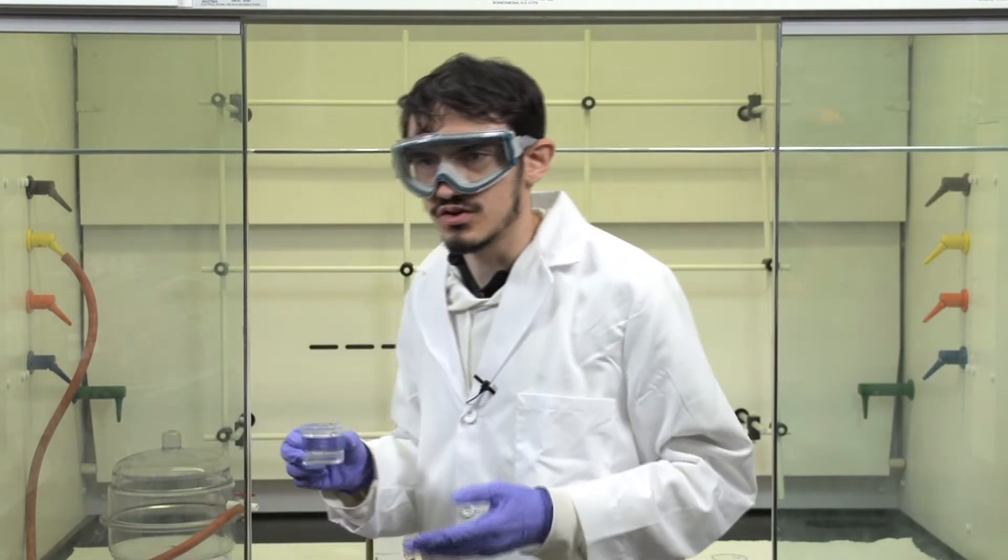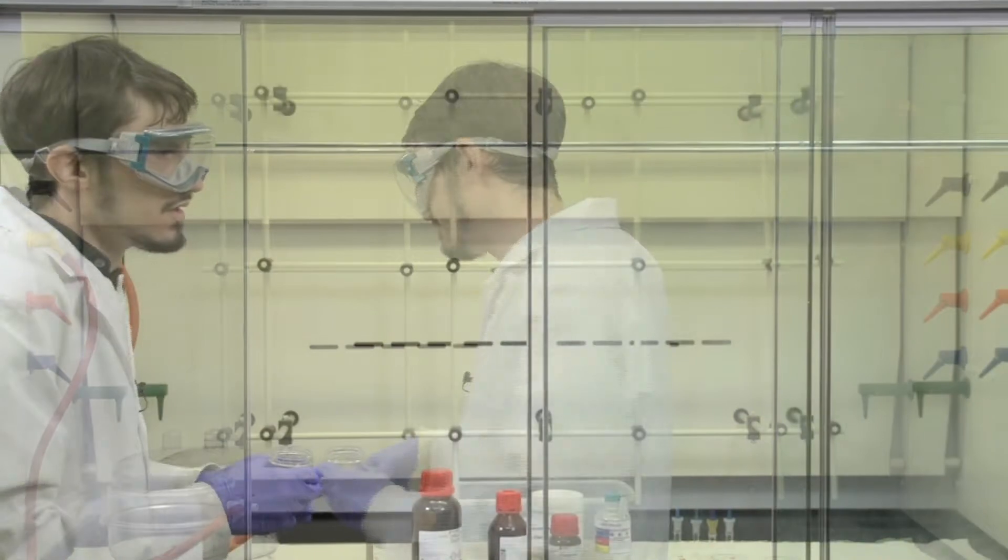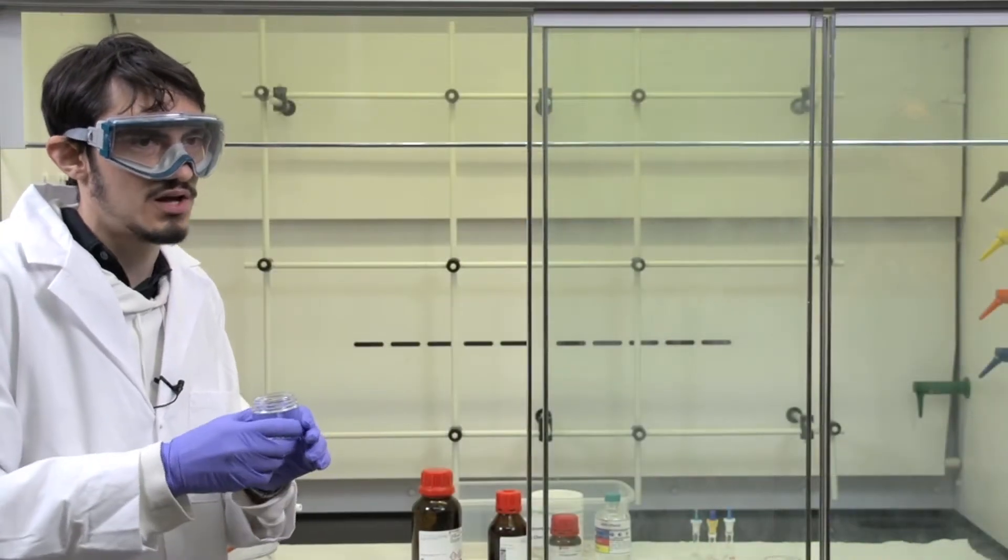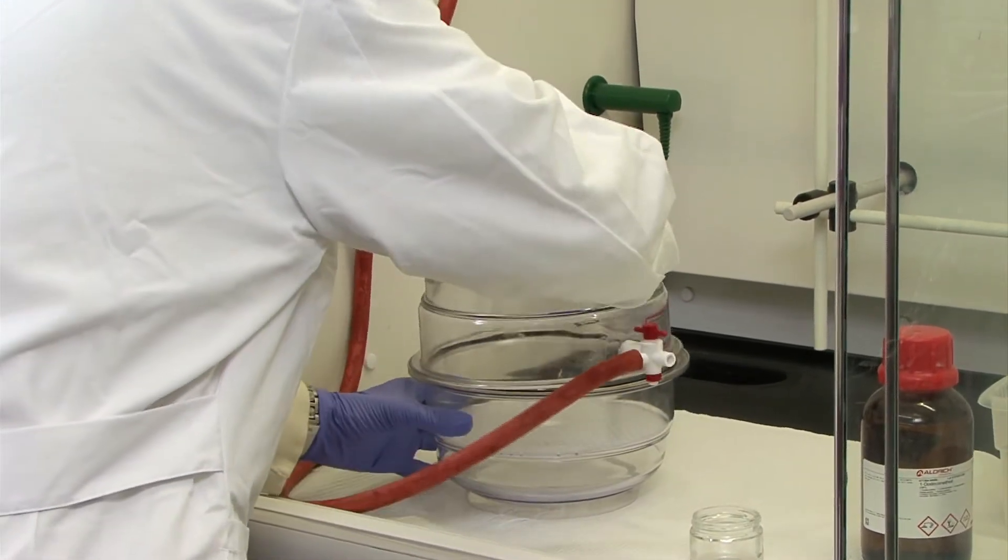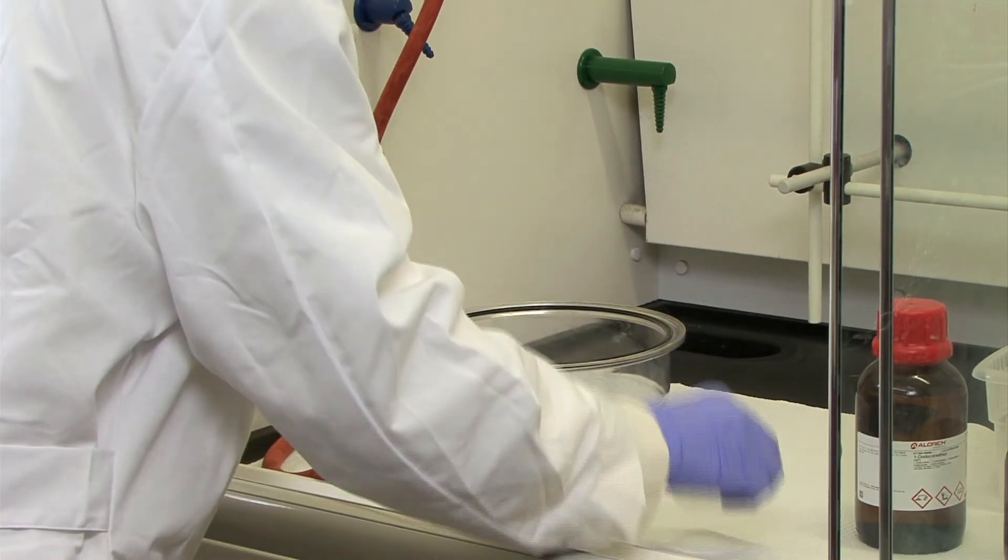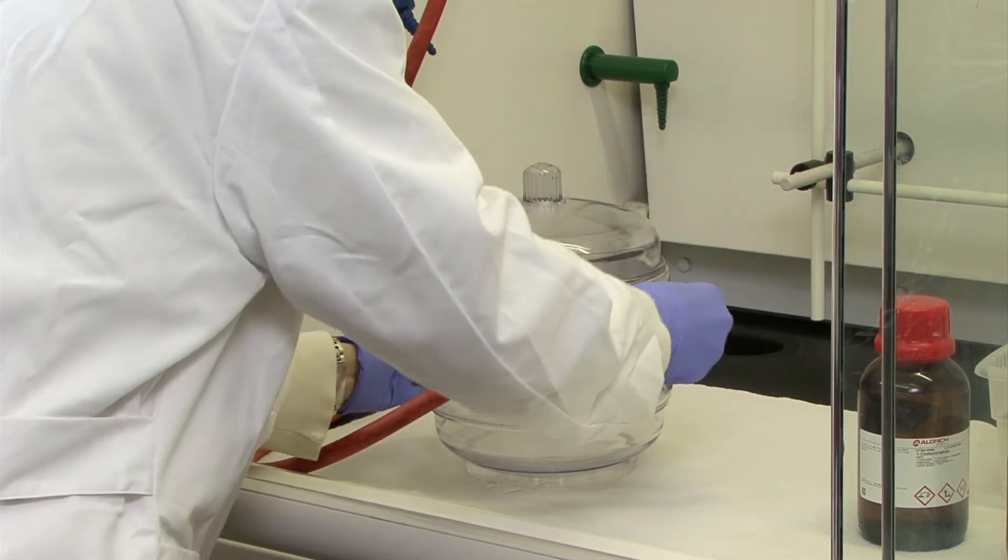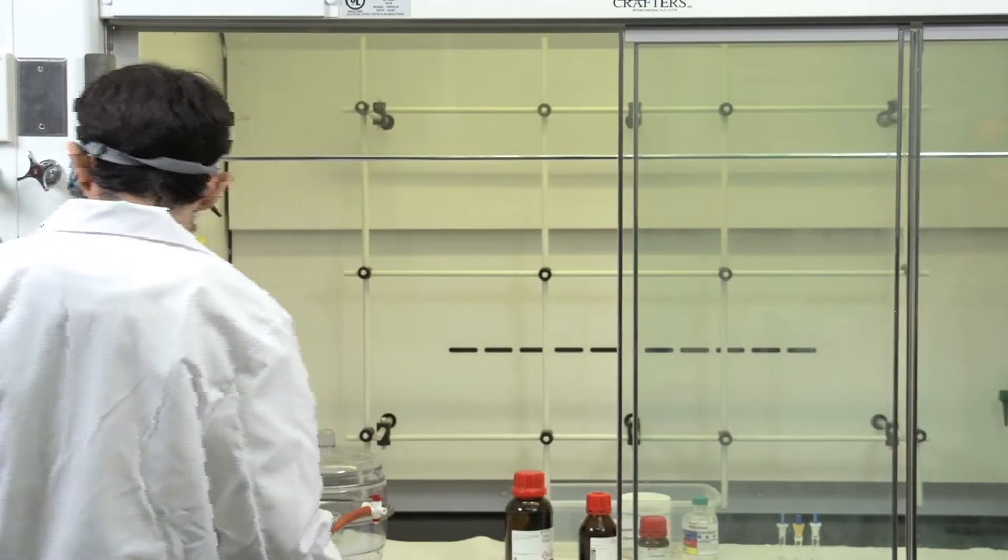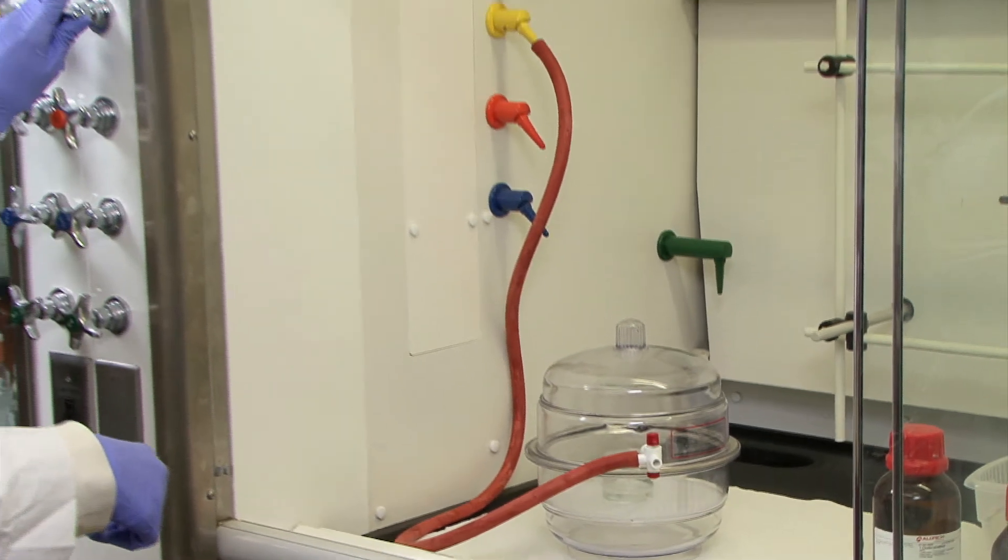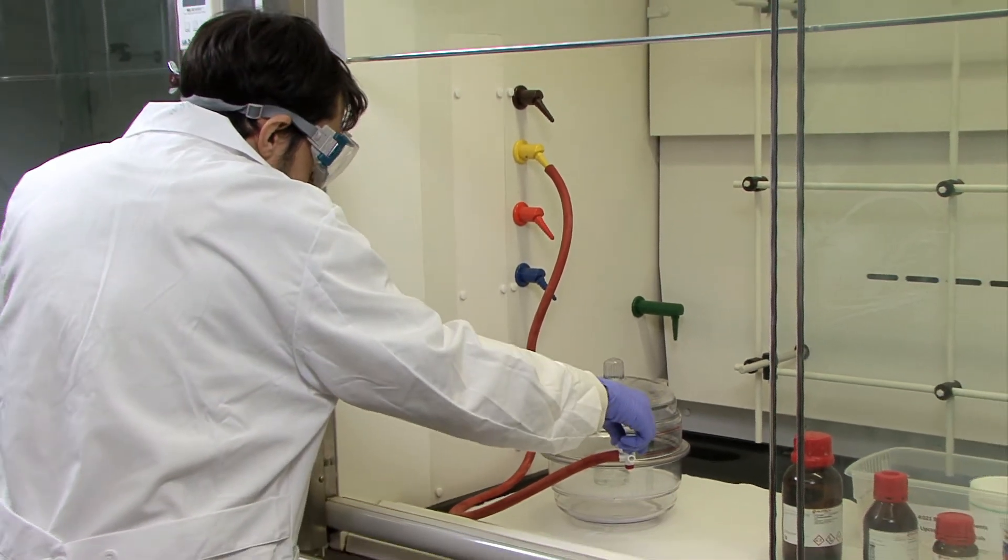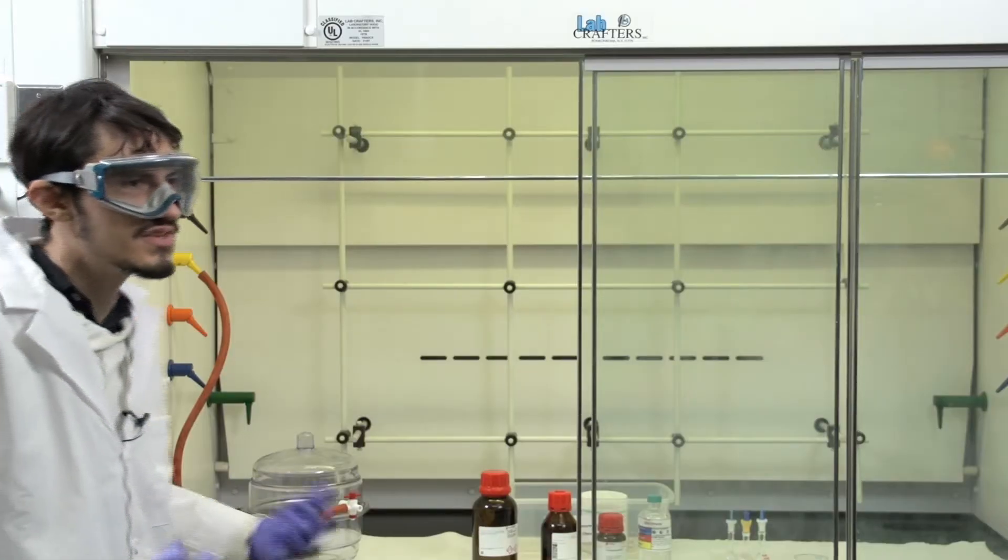Once the mixture is stirred, you want to make sure that it's degassed so that there's no bubbles in it. In order to do this, we use a vacuum desiccator which will be in the hood. So you want to put the jar with the PDMS polymer and curing agent into the desiccator. Make sure the top is on and you want to leave this here for 20 minutes.